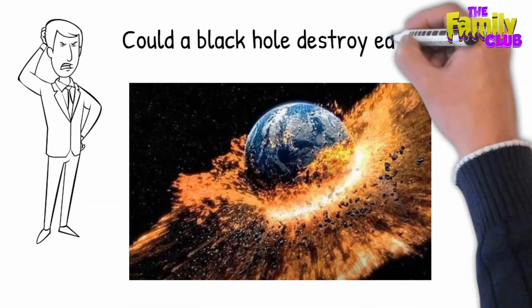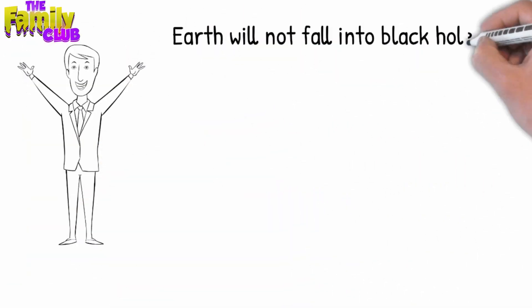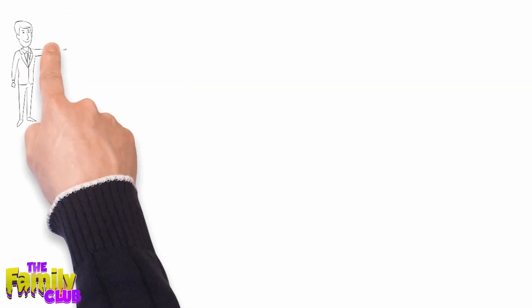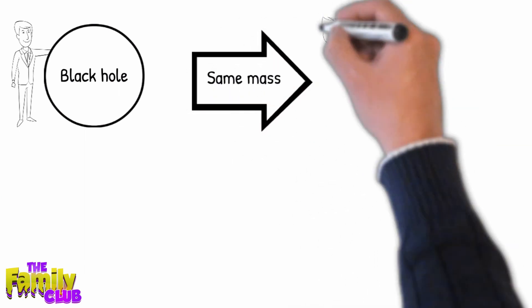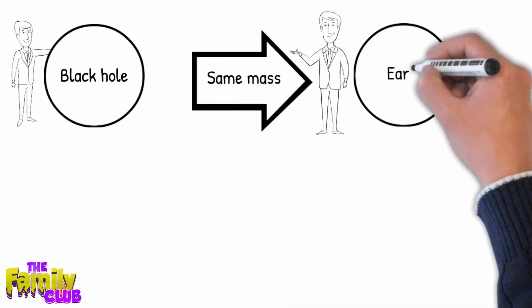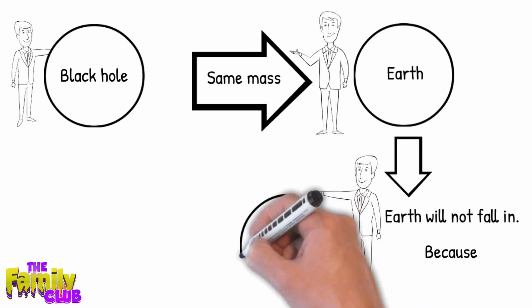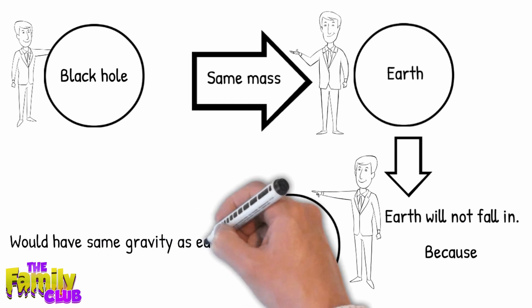Could a black hole destroy Earth? Earth will not fall into a black hole, because no black hole is close enough to the solar system for that to happen. Even if a black hole of the same mass as the Sun were to take the place of the Sun, Earth still would not fall in — the black hole would have the same gravity as the Sun.